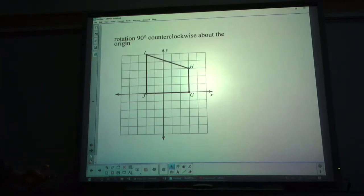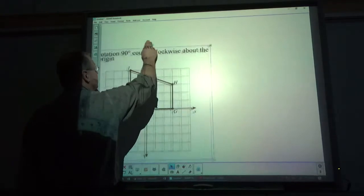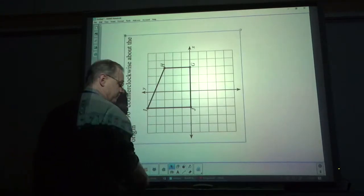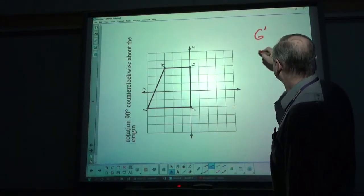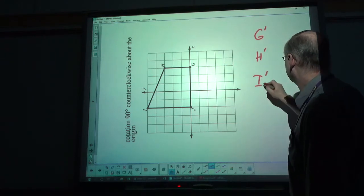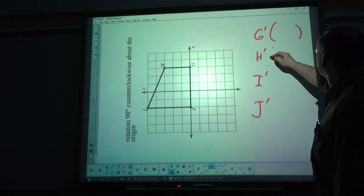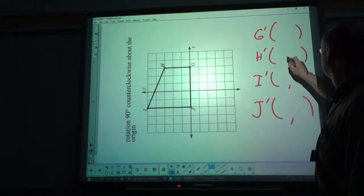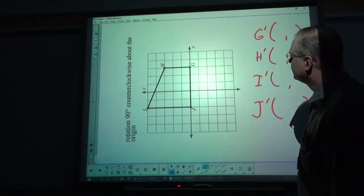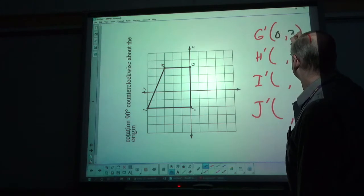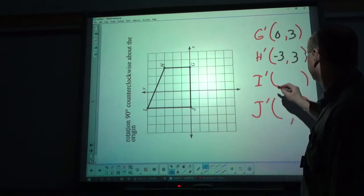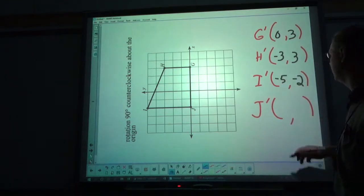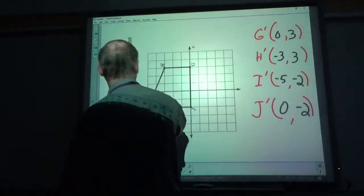Give this one a try on your own. After you unpause, I'll show you how to do it. Here we go. Counterclockwise. Going to grab the right spot. G, H, I, J. G is now at 0, 3. H is at negative 3, 3. I is at negative 5, negative 2. And J is at 0, negative 2. I turn this back.